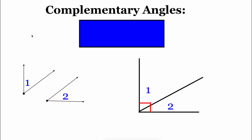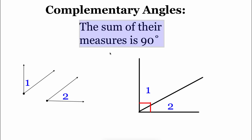The first angle pair we're talking about are complementary angles. You might be able to tell based on the picture — especially the bottom right-hand side — but complementary angles are two angles that, when you add them together, equal 90 degrees. Looking at our picture on the bottom right-hand side, it's easy to see that those are 90 degrees because it's got that red box in the bottom left-hand corner. But these other two angles on the left-hand side are also complementary even though they're not together.